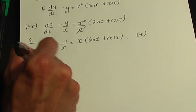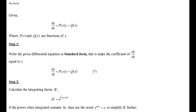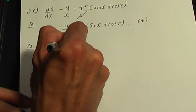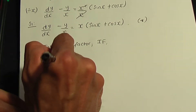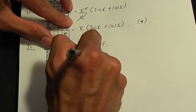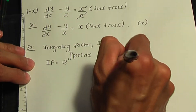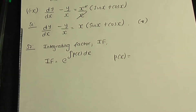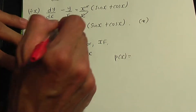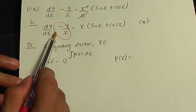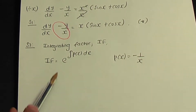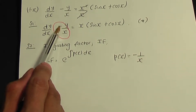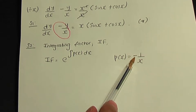This takes us to step number 2: calculate the integrating factor. The formula is IF = e^(∫p(x)dx), where p(x) is the term in front of y in your standard form equation. In our case, it's minus 1 over x. So p(x) = −1/x. Be sure to include that minus sign.